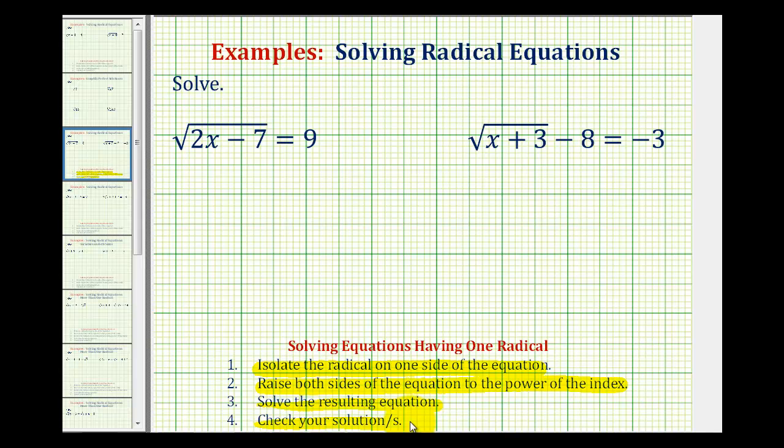Looking at our first example, we have the square root of the quantity 2x minus 7 equals 9. Notice how the square root is already isolated on the left side of the equation, and because we have a square root, the index is 2, so we can undo the square root by squaring both sides of the equation.